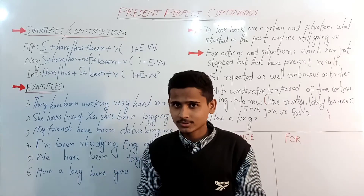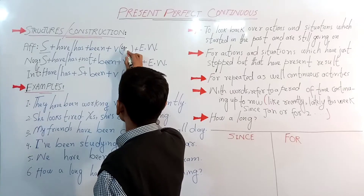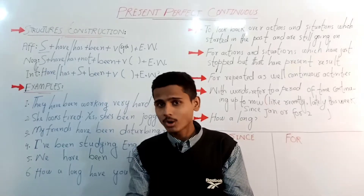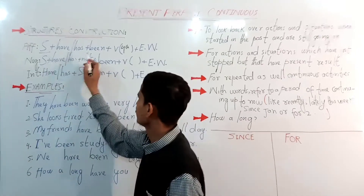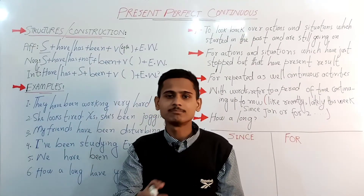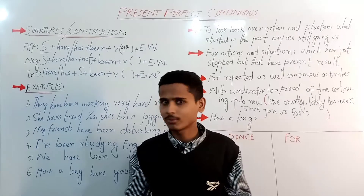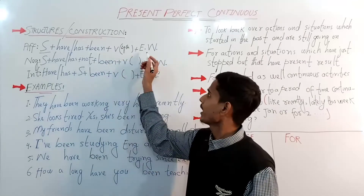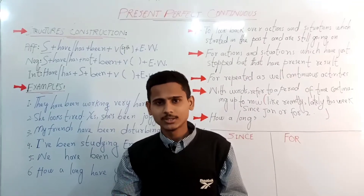The main verb goes in the fourth form since this is a continuous or progressive tense. For the perfect aspect, we use the third form — past participle of 'be', which is 'been'. So the structure is both perfect as well as continuous or progressive.